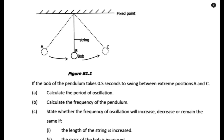In this video, let us have a look at questions from a simple pendulum. You need to know how to define a simple pendulum. A simple pendulum is a small mass called the bob, suspended by an inextensible string attached to a fixed pivot. That is how you define a simple pendulum.